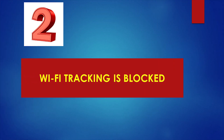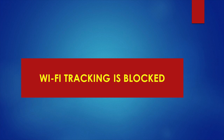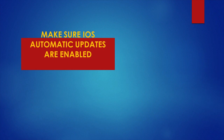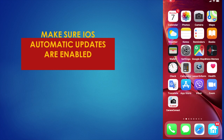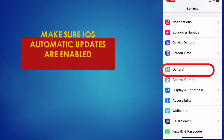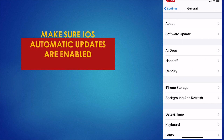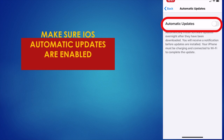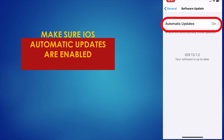Number two: you need to block Wi-Fi tracking. In order to do so, you need to do a simple and easy step, which is update your iOS. To update iOS, go to Settings, then General, then select Software Update. Update your software if it is not updated yet, and make sure to turn this on.